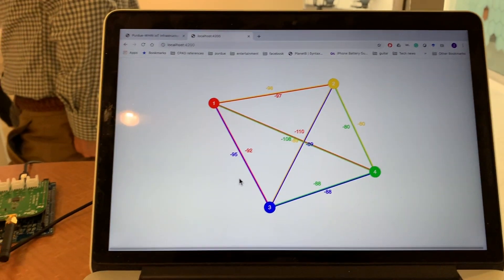The red, yellow, blue, and green nodes represent the four sensor nodes, and the lines between each two nodes indicate the link between them.